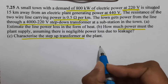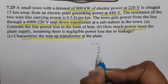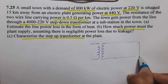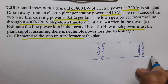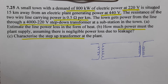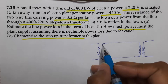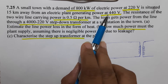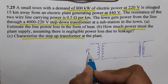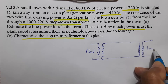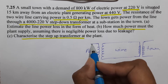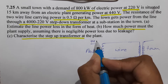Let us understand the entire system with a diagram so we can easily understand it. Here there is a power plant. We have to try to find the solution, so first we plot the diagram so the picture will be clear. The power plant generates power at 440 volts. This is the plant, this is your town, and in between are the wires used for connection.